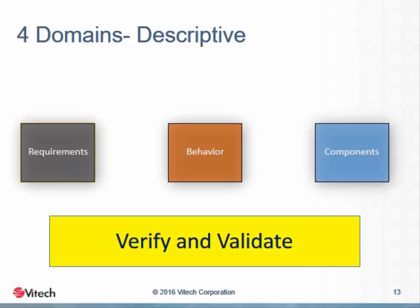Systems engineering classically recognizes four domains: requirements, behavior, physical architecture or components, and verification and validation. Requirements express the needs that drive the necessity for the design process. Behavior is composed of the functions the system performs in satisfaction of those requirements. The physical architecture or components are the mechanism by which the system executes its behaviors. Validation is the process of determining that the design has arrived at the right solution, while verification determines that the solution is executed properly. The requirements define a logical description of what the system needs to do, and the engineering process then builds a physical description of how the system will do that.